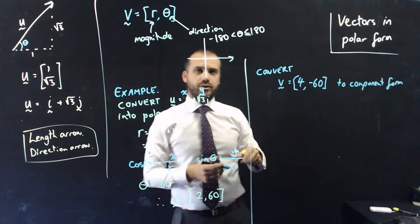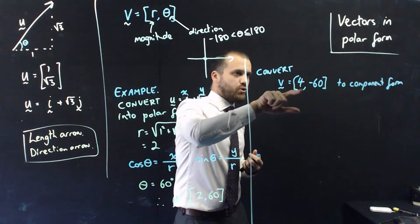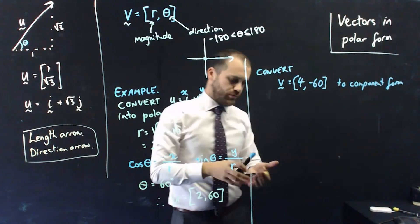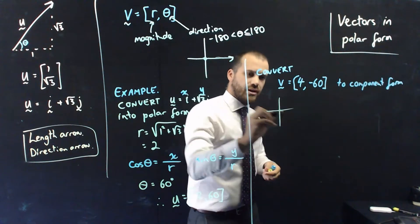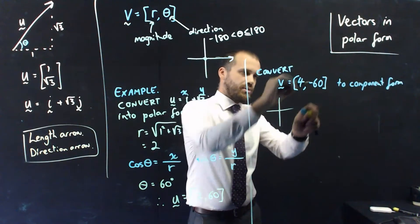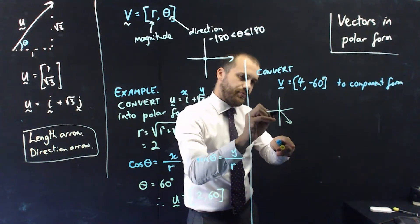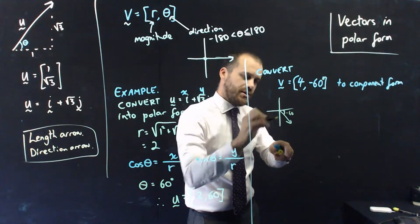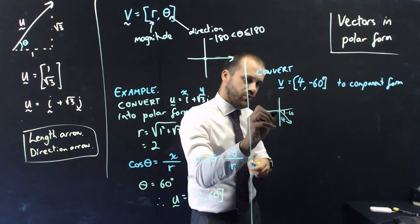Now, of course, I can work backwards here. I can convert the vector v equals 4 comma negative 60 to component form. So, first of all, this isn't necessary, but I'm going to draw it because I like to draw stuff. That looks like this. Negative 60 is my angle, degrees, so I can put that in there like that, and there's negative 60 there, and the length of my vector is 4.